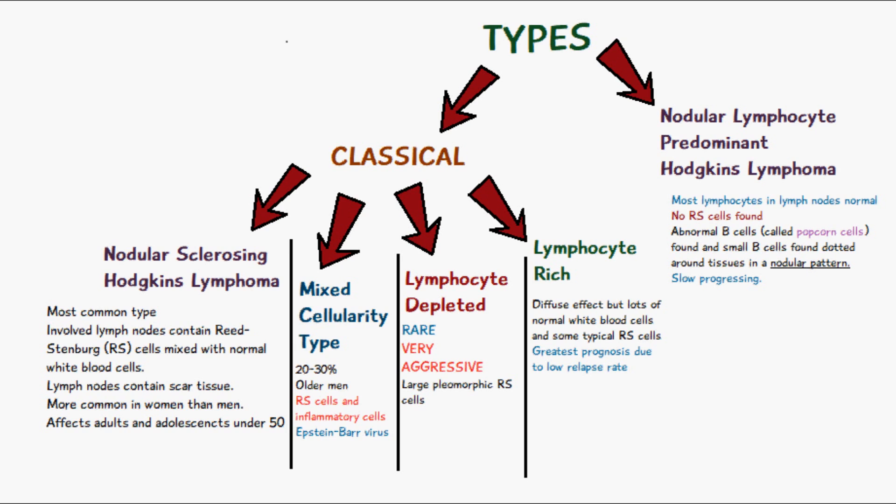The lymphocyte depleted type is very rare and very aggressive; it consists of large pleomorphic Reed-Sternberg cells. The lymphocyte rich type has a very diffuse effect throughout the body, but there are still a lot of normal white blood cells and a few typical Reed-Sternberg cells. The lymphocyte rich type has the greatest prognosis because there is a very low likelihood of a relapse.